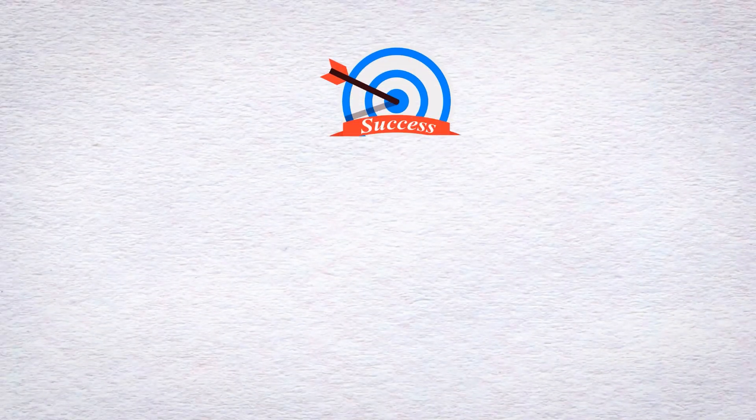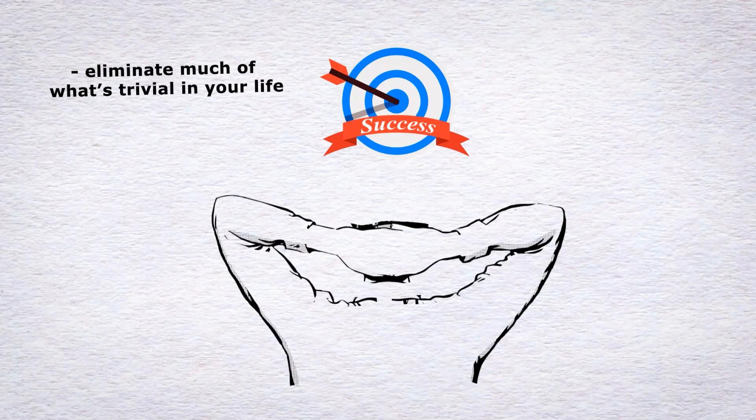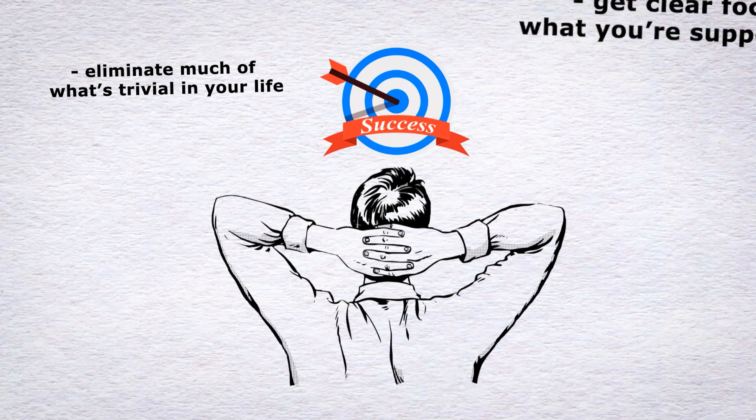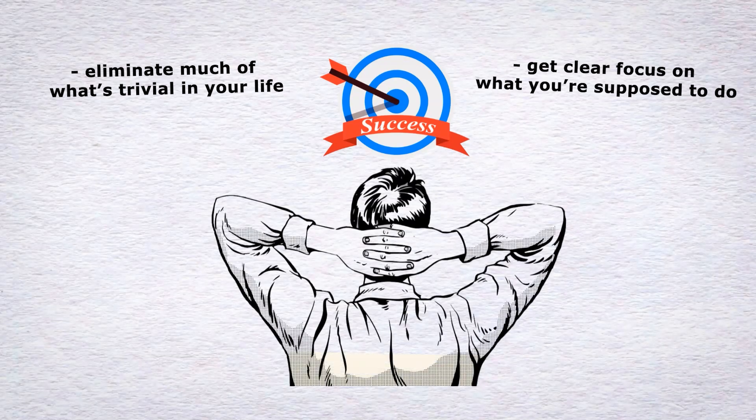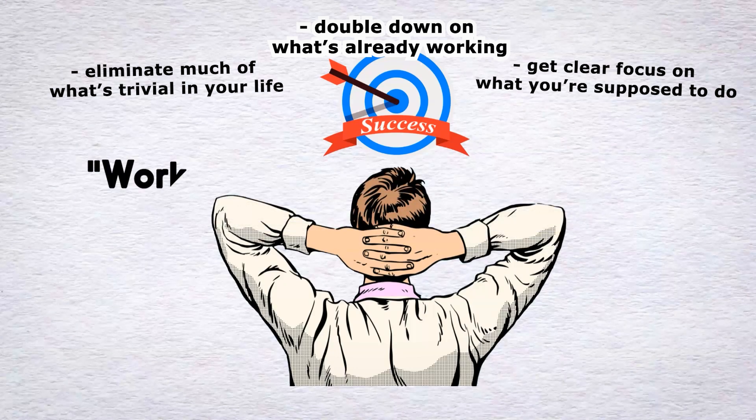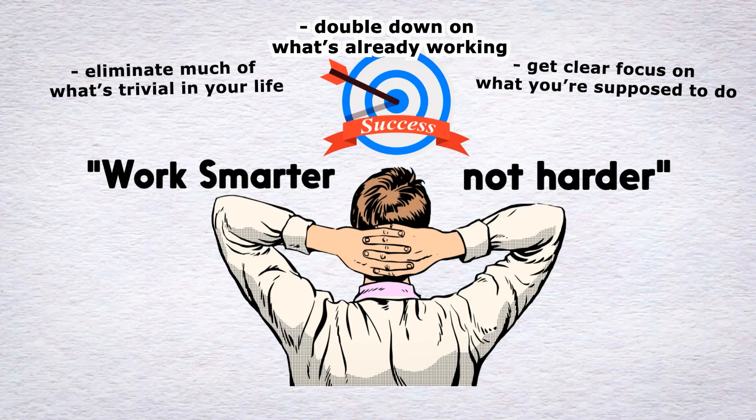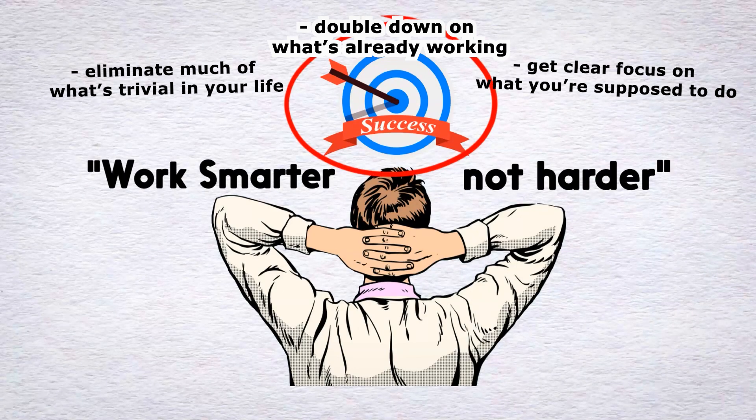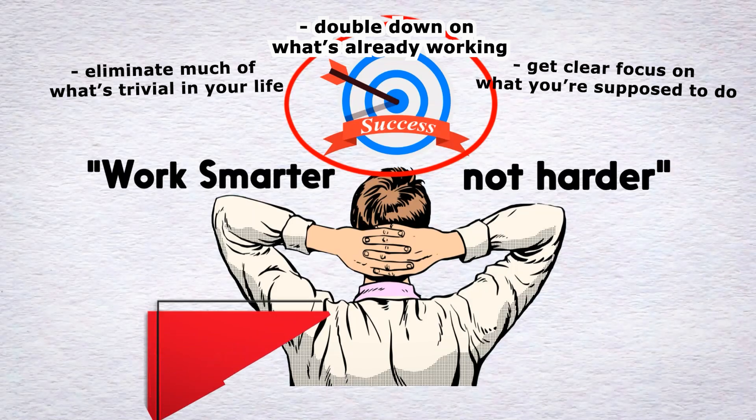By focusing on your one thing, you can eliminate much of what's trivial in your life, get clear focus on what you're supposed to do, and double down on what's already working. When applied, this concept will help you work smarter, not harder. And once you've identified your one thing, your job is to carve out time to work on it daily.